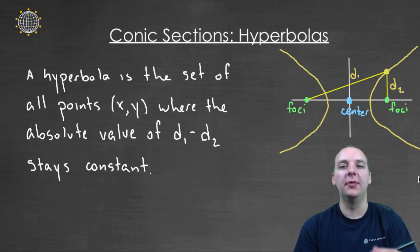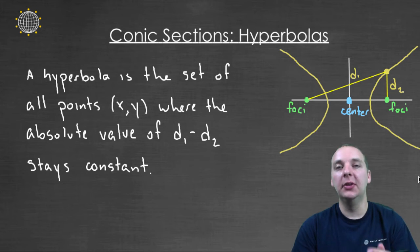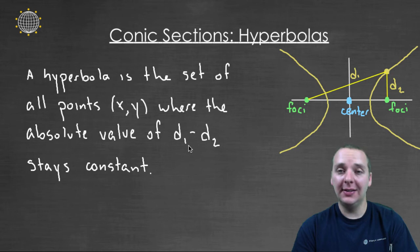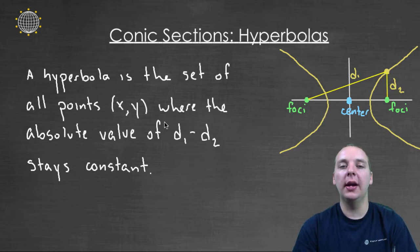So now here's your formal definition. Hopefully this makes a little bit of sense, because it's pretty wordy. A hyperbola is the set of all points x comma y, where the absolute value of the distances, or the difference of the distances between the two foci stays constant. I kind of shorthanded this right here, because I'm telling it to you. I didn't really write out all those details, but you get the gist of it there.